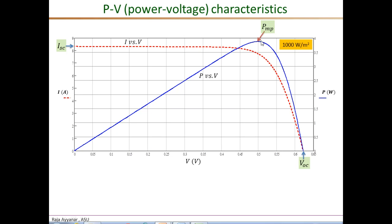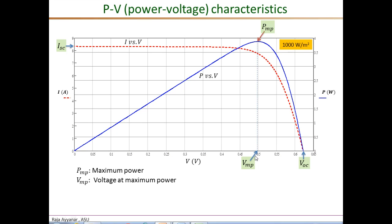The point at which maximum power occurs is called the maximum power point, and the power here is PMP — the maximum power. The voltage at which power is maximum is called the maximum power point voltage VMP, which in this example is very close to 0.5 volts. The corresponding current at this maximum power point, read from the I-V characteristic at VMP, is called the maximum power point current IMP. In this example IMP is just slightly less than 8 amperes and PMP is about 3.9 watts for a single cell.